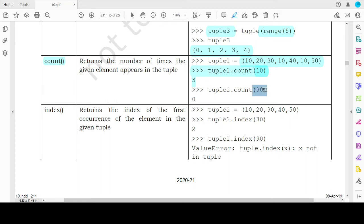And if you pass as an argument an element that is not present inside the tuple, the count function will return 0. It will not throw an error, it will return 0.